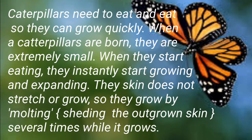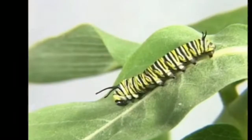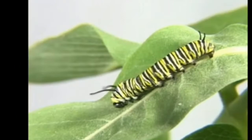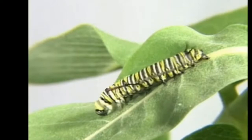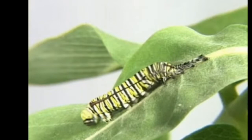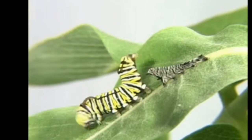Caterpillars need to eat and eat so they can grow quickly. When caterpillars are born they are extremely small. When they start eating, they instantly start growing and expanding. Their skin does not stretch or grow, so they grow by molting several times. Here we can see how the caterpillar is molting its skin. Caterpillars can grow 100 times their size during this stage.